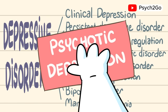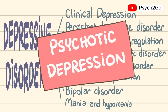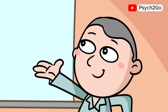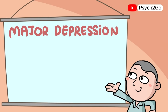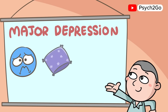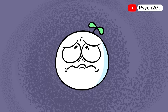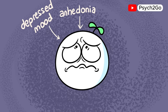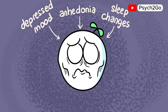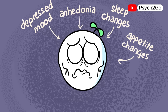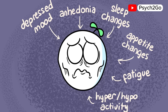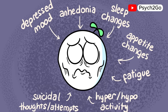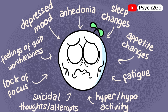Within the subtype of major depression exists psychotic depression. Psychologist Anthony D. Smith outlines the symptoms that characterize major depression, which are depressed mood, sleep changes, suicidal thoughts, and feelings of worthlessness, among many others. Common characteristics include depressed mood, anhedonia, lack of interest in previously enjoyed activities, sleep changes, appetite changes, fatigue, hyper or hypo activity, suicidal thoughts and attempts, lack of focus, and feelings of guilt or worthlessness.